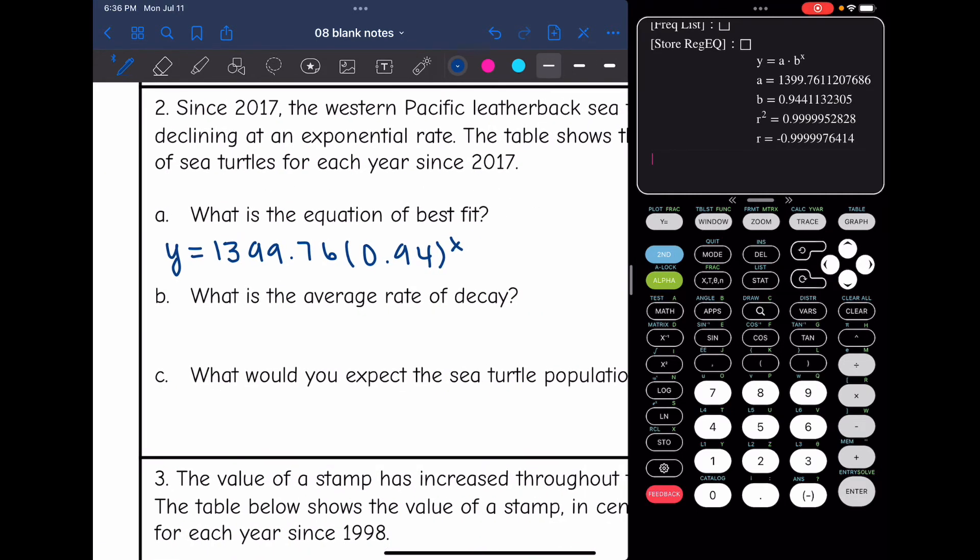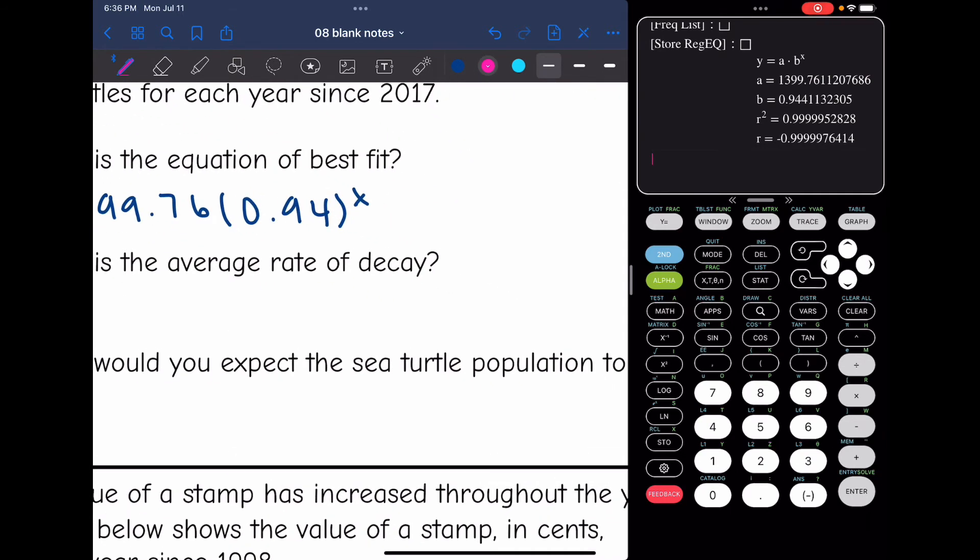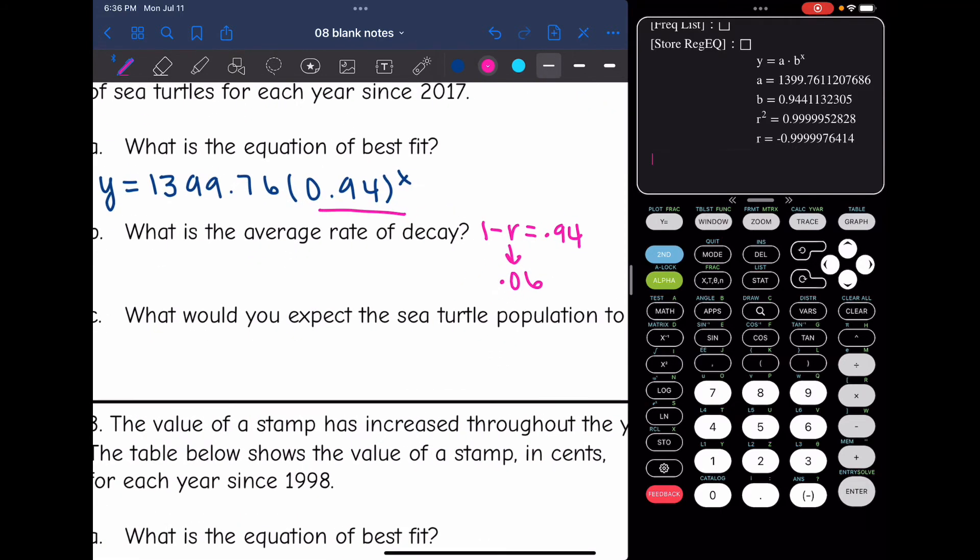Okay, then it says what is the average rate of decay? So remember we do 1 minus the rate in decay and that's how we got the 0.94 and that means that R would be 0.06 because 1 minus 0.06 is 0.94. So we are decaying 6%.